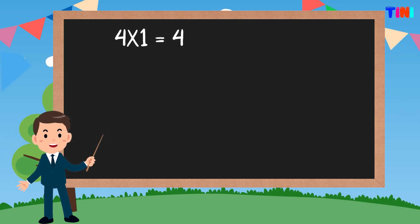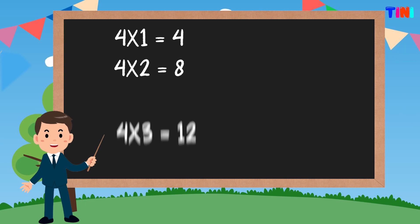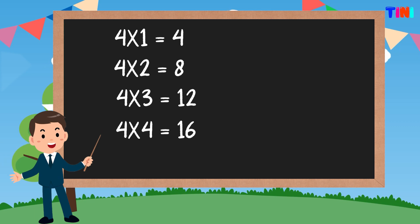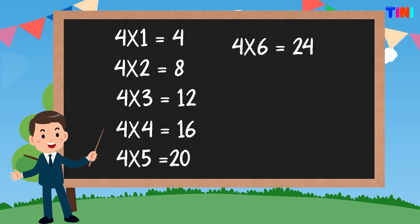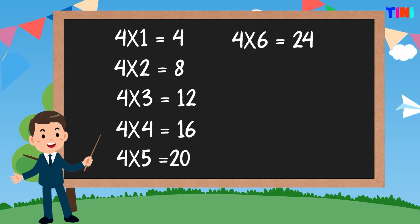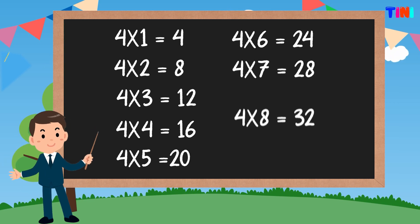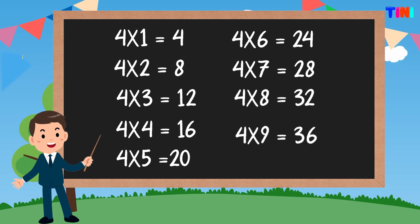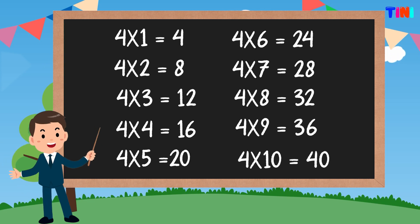4 ones are 4. 4 twos are 8. 4 threes are 12. 4 fours are 16. 4 fives are 20. 4 sixes are 24. 4 sevens are 28. 4 eights are 32. 4 nines are 36. 4 tens are 40.